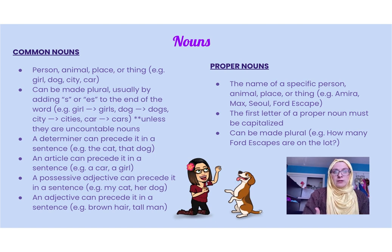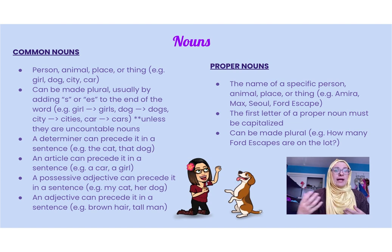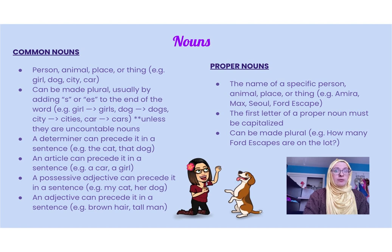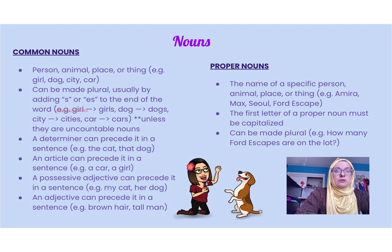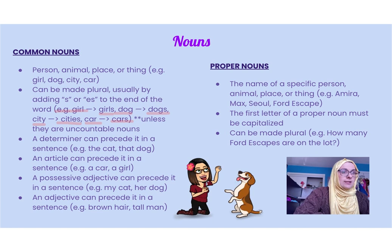We know that words are nouns because we can make them plural — we can add S or ES to the end of a word. For example: girl, girls; dog, dogs; city, cities; car, cars. So this tells us the word is a noun.